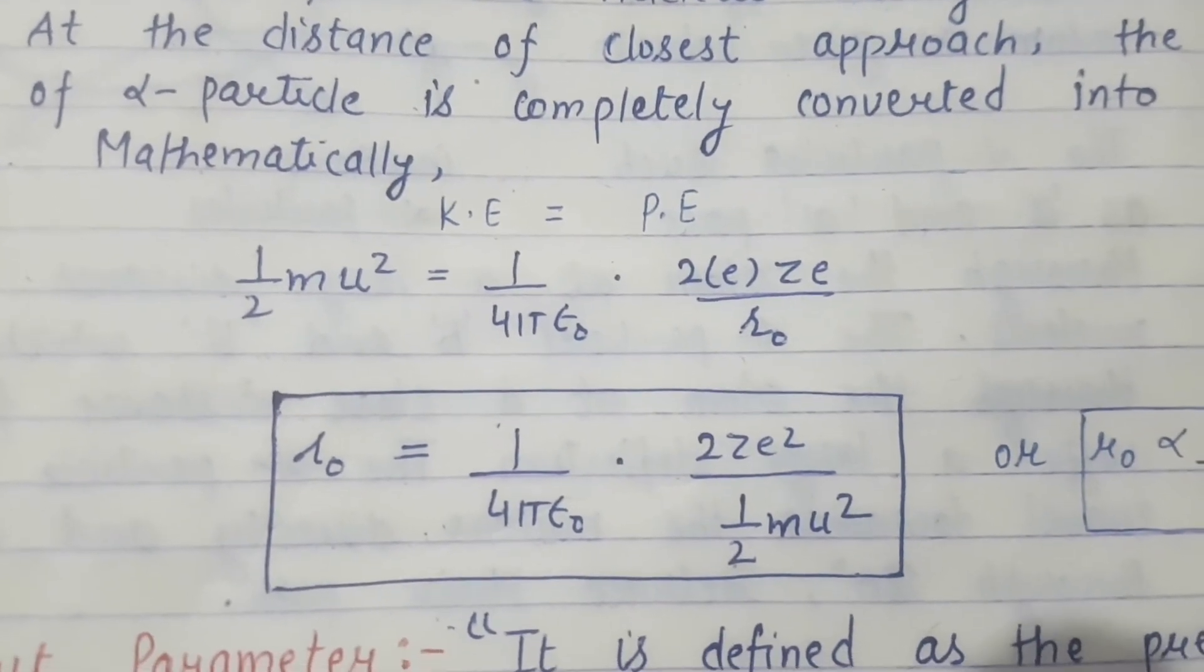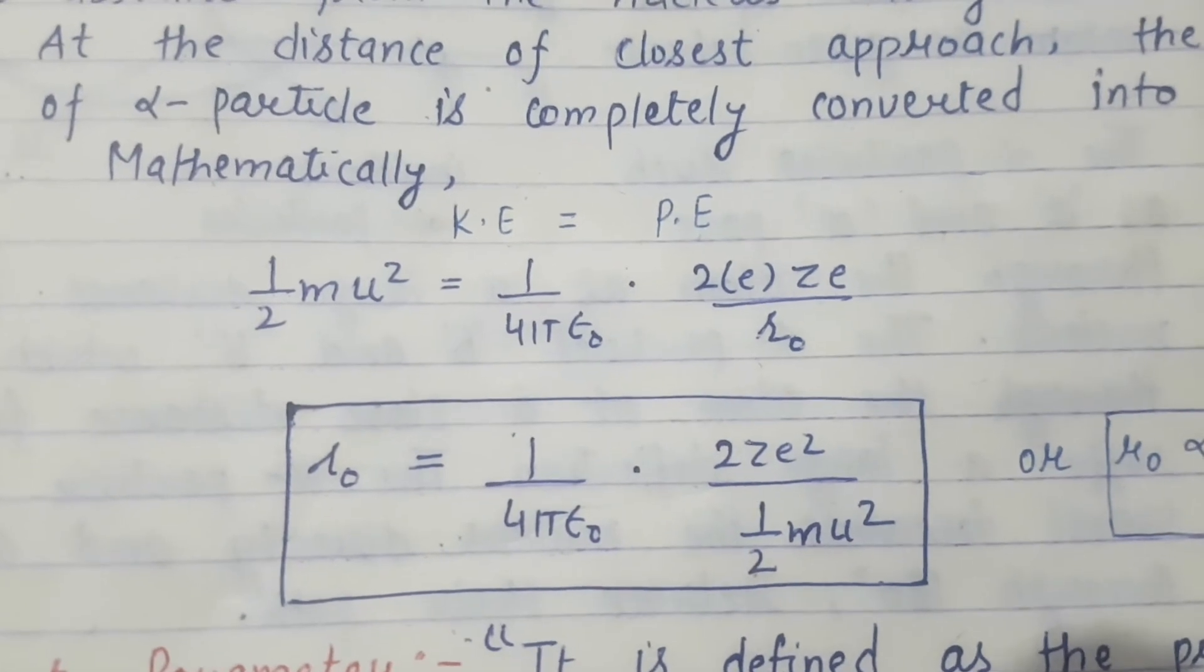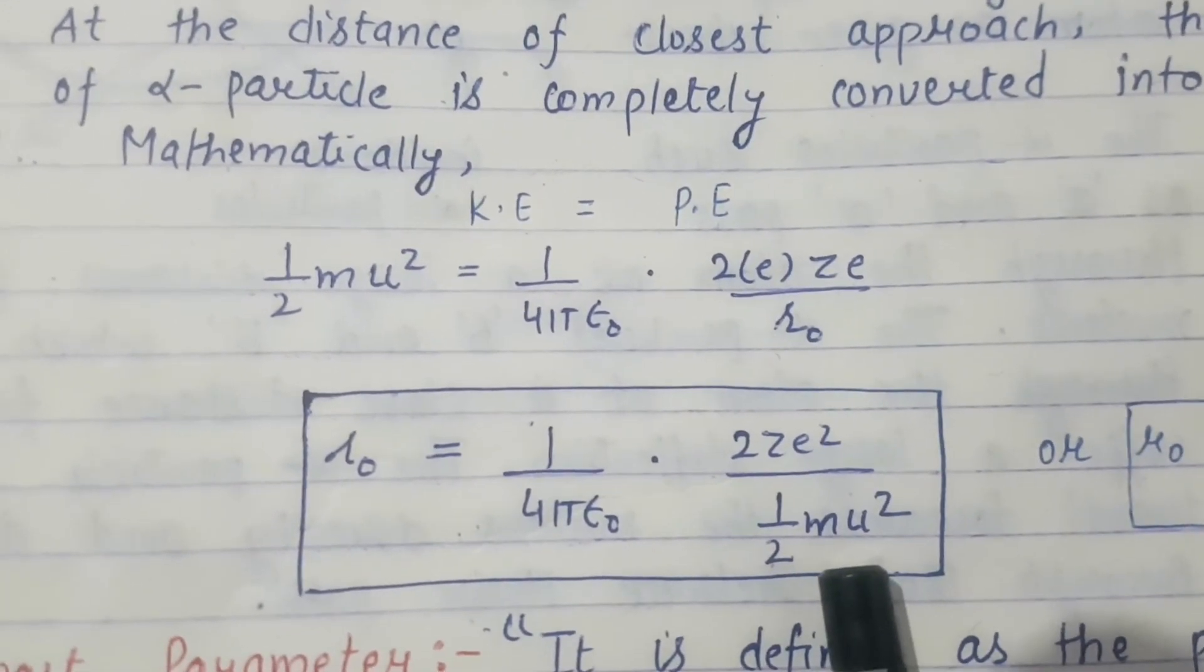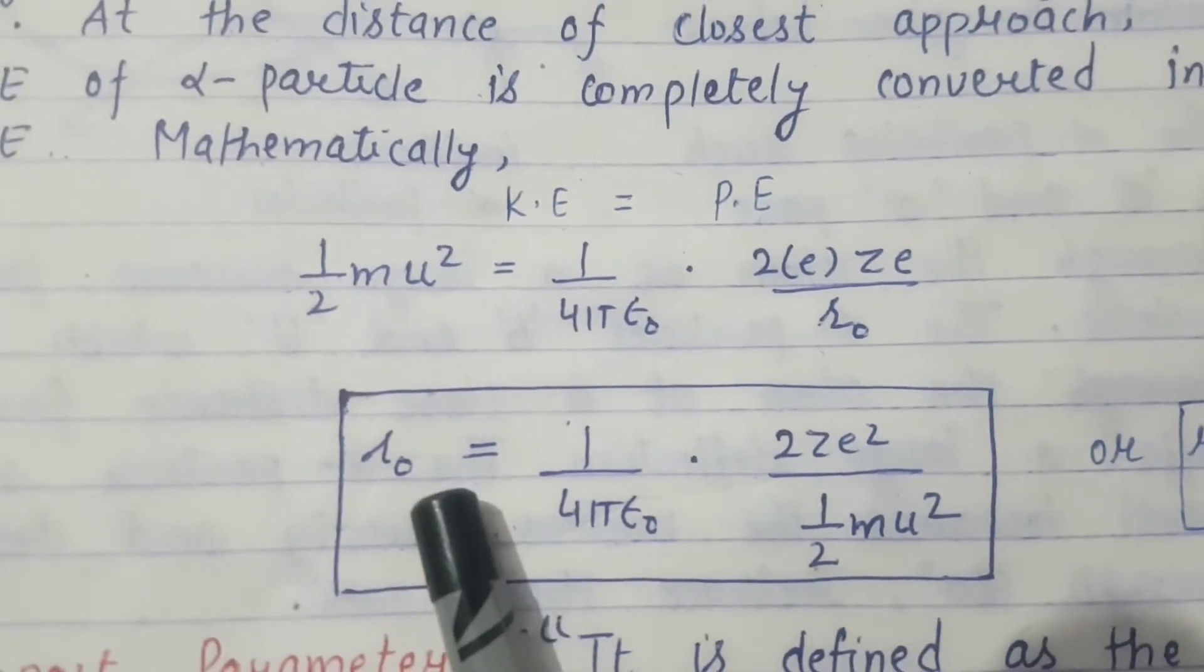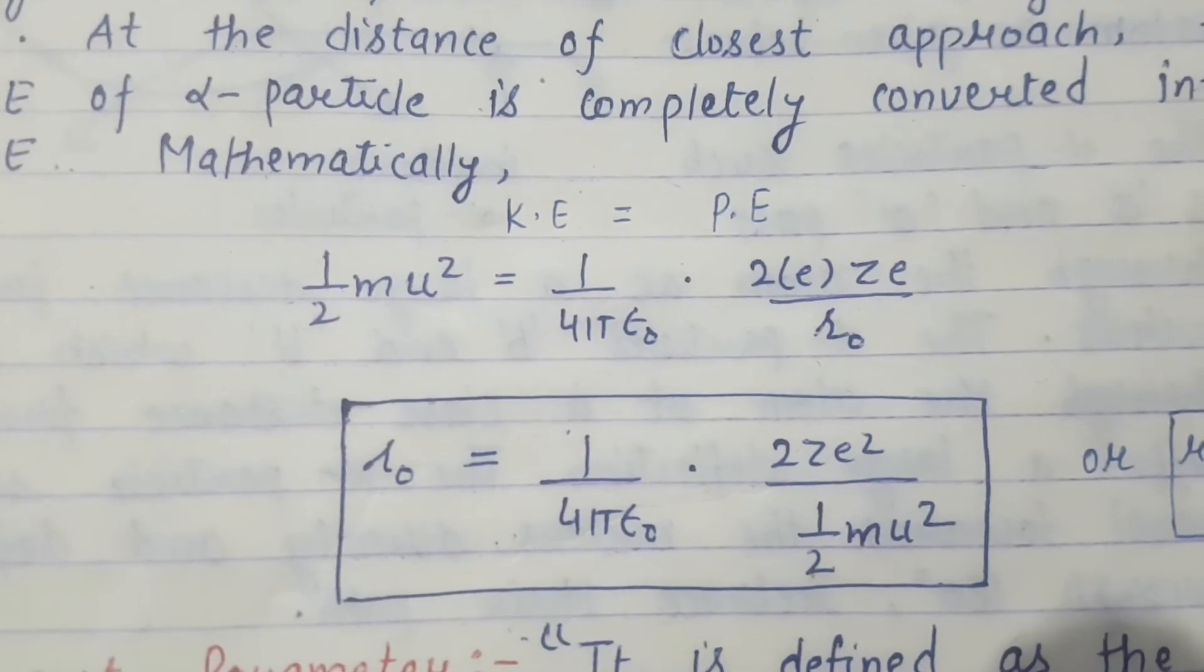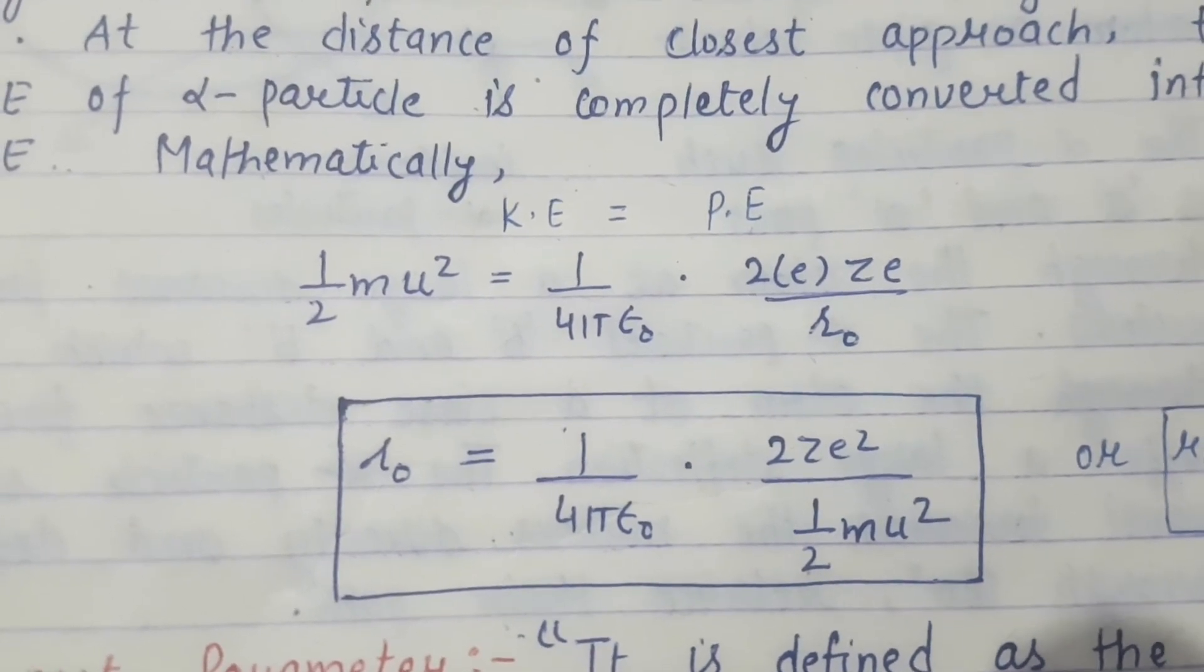This is all about the distance of closest approach. One thing more: the distance of closest approach is also known as the size of the nucleus, because from this equation we can determine the radius or the size of a nucleus.